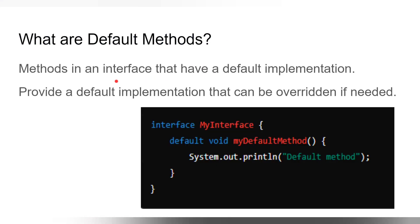Now let's understand what is a default method. A method in an interface that has a default implementation — it provides a default implementation that can be overridden if needed. Inside an interface called MyInterface, we have one method named myDefaultMethod, and this should be provided with the keyword 'default'. Once you provide the default keyword, it is a default method and you can provide the implementation of it inside the interface. Any class which implements this interface can use this default method and can also override the implementation inside their class. Remember: methods declared with the default keyword are default methods, and their implementation can be overridden.